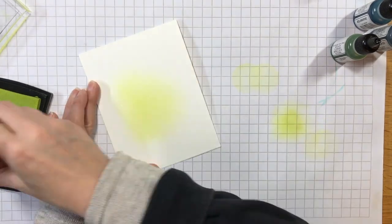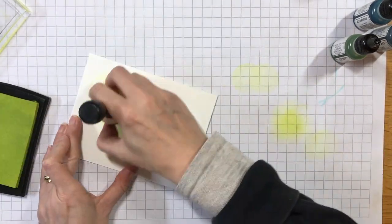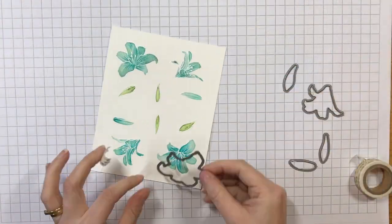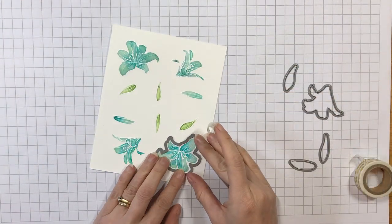I blended some lemongrass pigment ink onto my base card using a sponge applicator and then used score tape on the back of the polka plate die cut panel and adhered it in place on the front of the card.